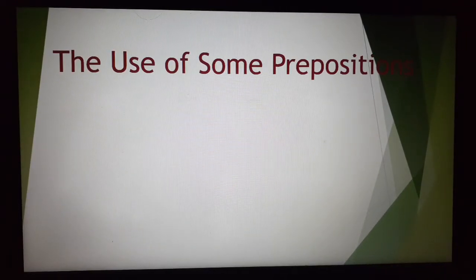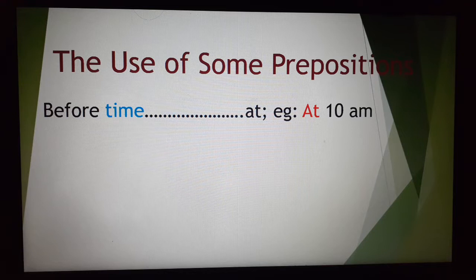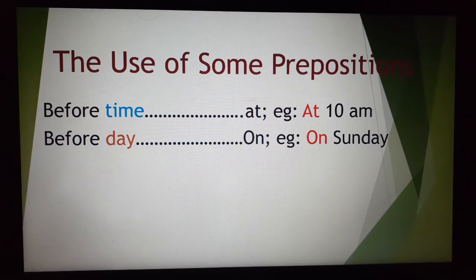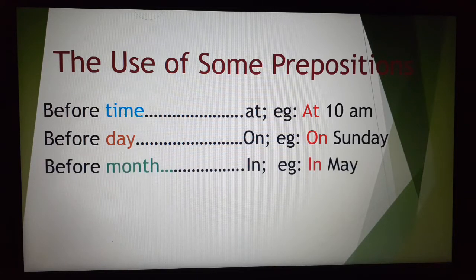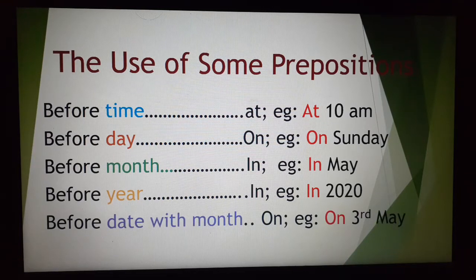You also have to know the use of some prepositions. Before time, you have to use 'at' — for example, at 10 a.m. Before day, you have to use 'on' — for example, on Sunday. Before month, you have to use 'in' — for example, in May. Before year, you have to use 'in' — for example, in 2020. Before date with month, you have to use 'on' — for example, on 3rd May.